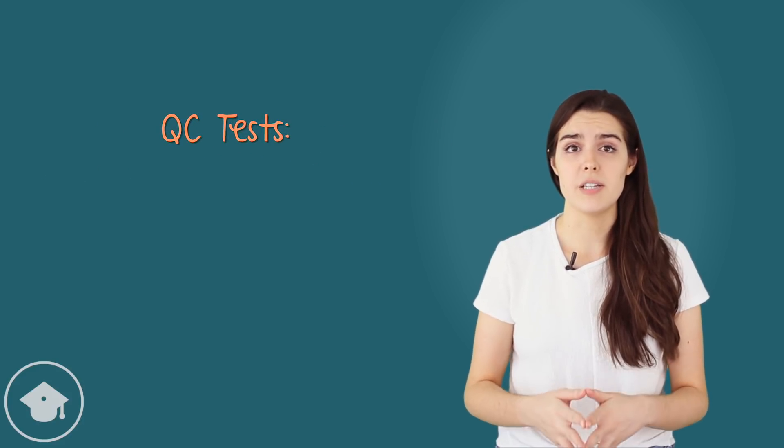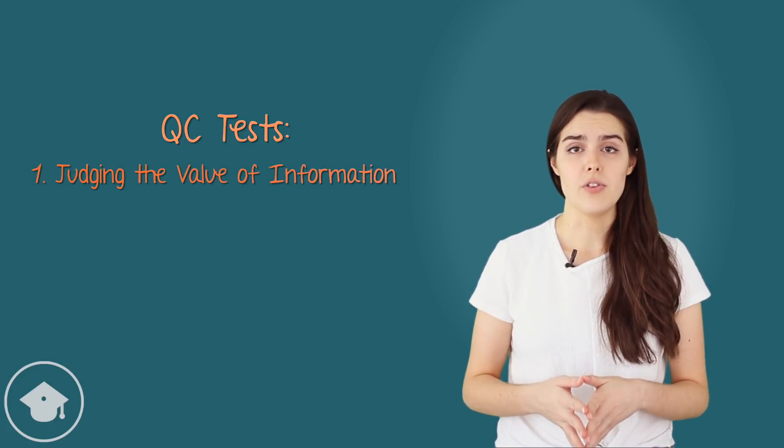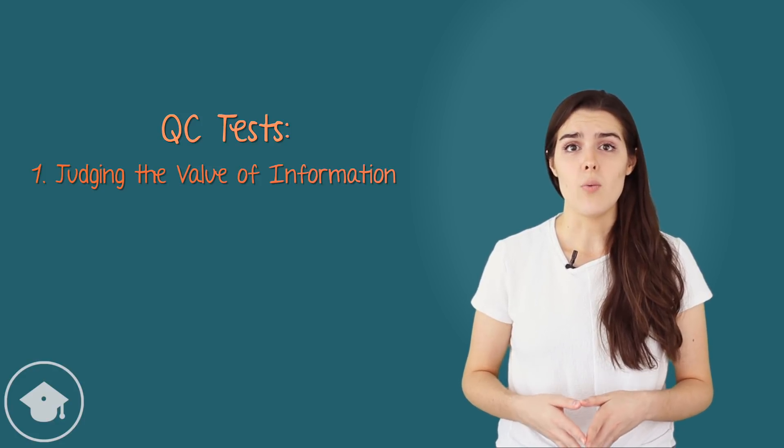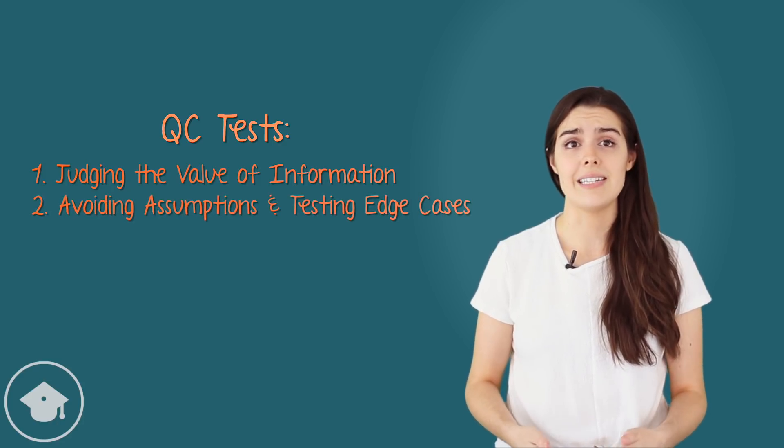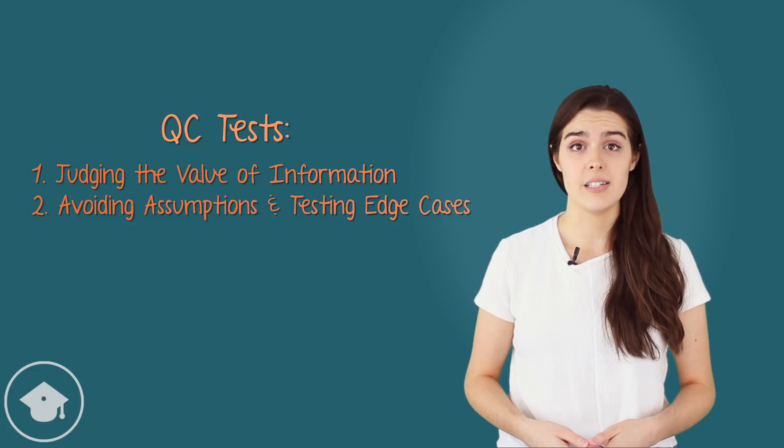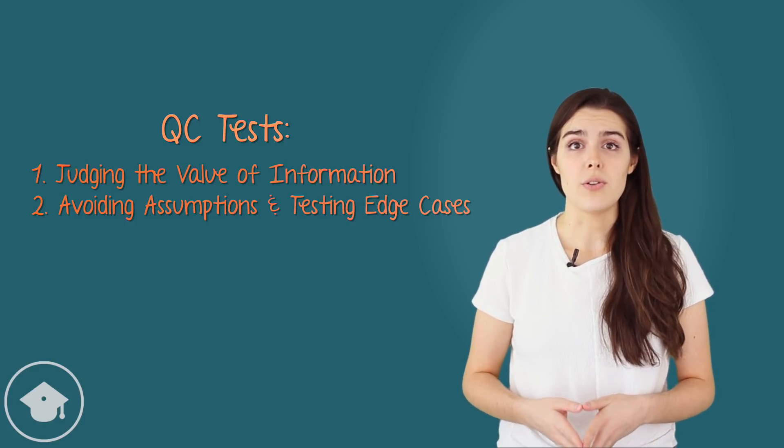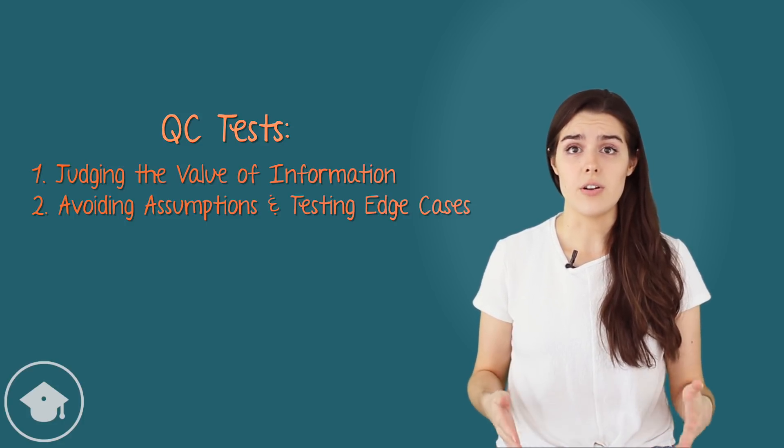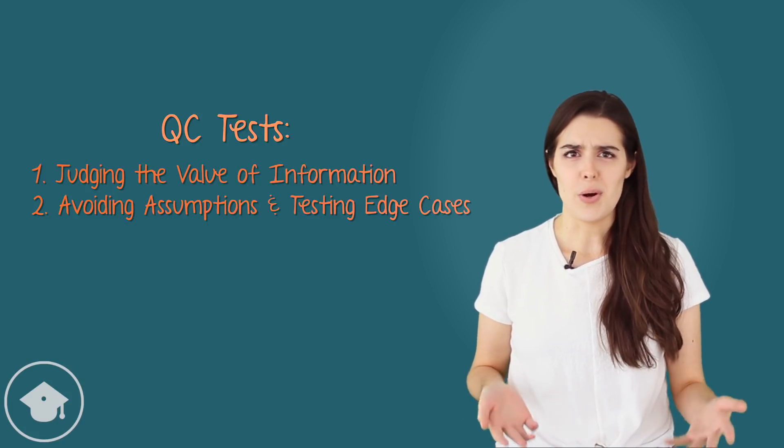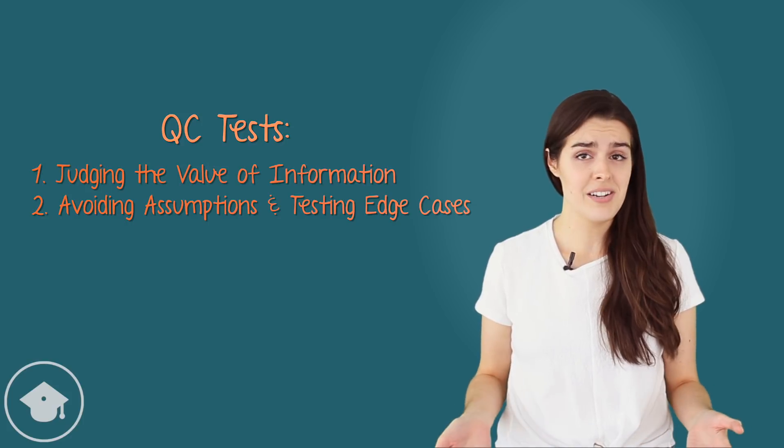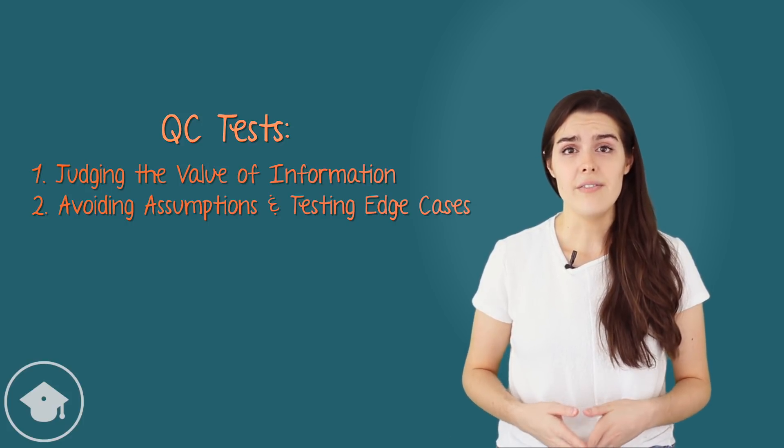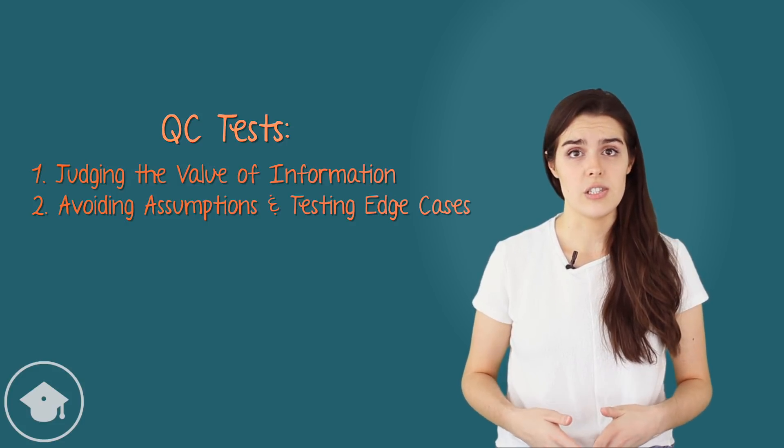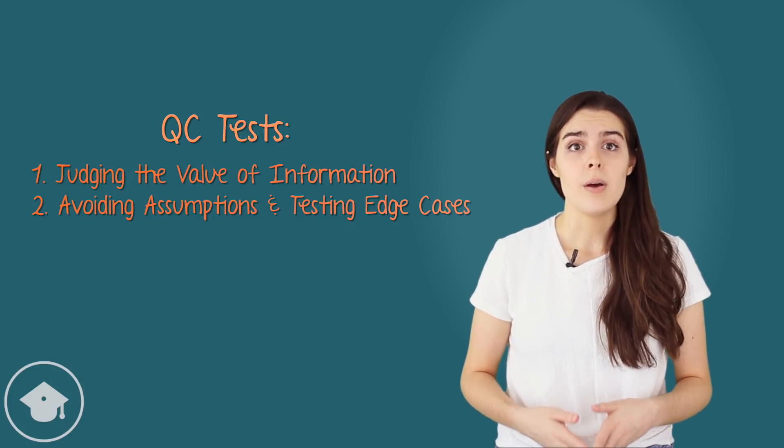Quantitative comparison questions test a couple things specifically. One is determining the value of information to making decisions. We get a limited amount of information in the question stem and quantities. It's up to us to figure out whether it's enough information to solve. Another is avoiding and testing assumptions, specifically by finding edge cases. The closest analog these questions have is data sufficiency on the GMAT. In fact, if you're looking for more advice on these questions, look into suggestions for data sufficiency. The most useful strategies are transferable between the question types.